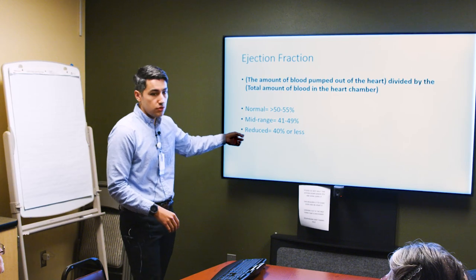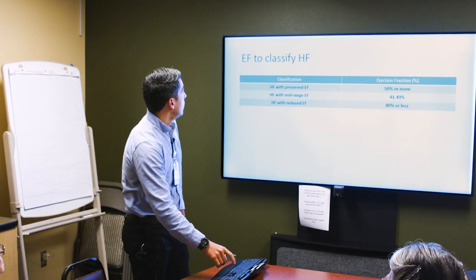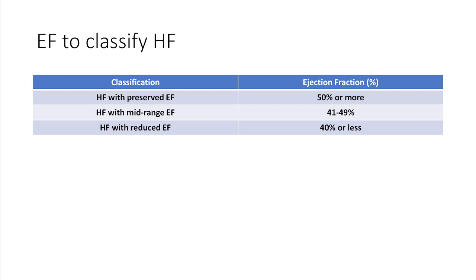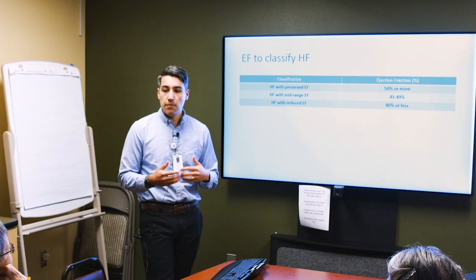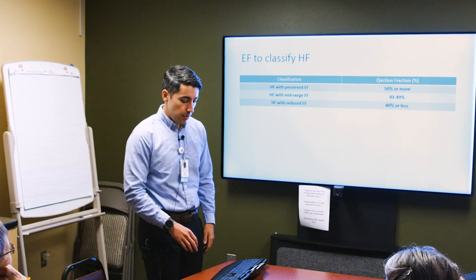We classify heart failure based on ejection fraction. Heart failure with reduced ejection fraction is 40 percent or less. Heart failure with mid-range ejection fraction is 41 to 49 percent. Heart failure with preserved ejection fraction is 50 percent or more. That classification is important because it tells us what medicines and therapies are most likely to be beneficial in your situation.